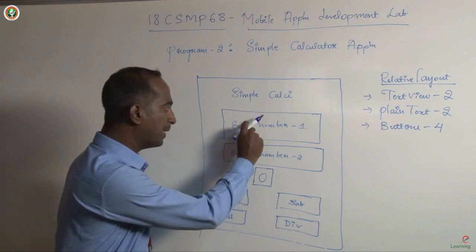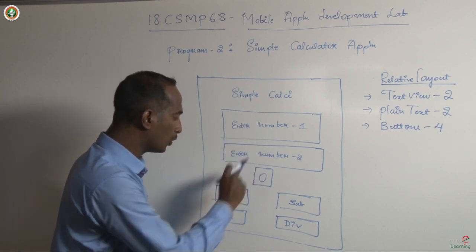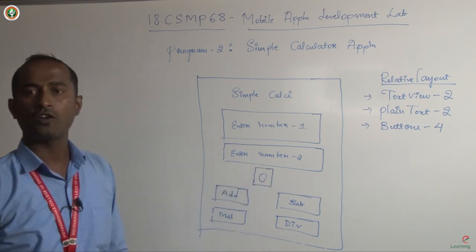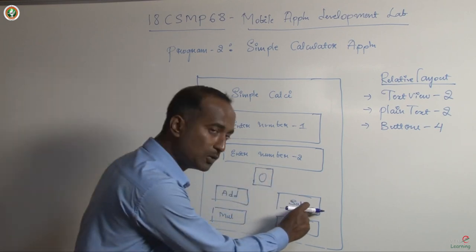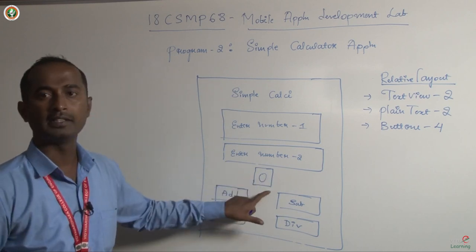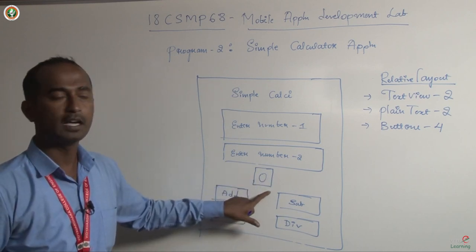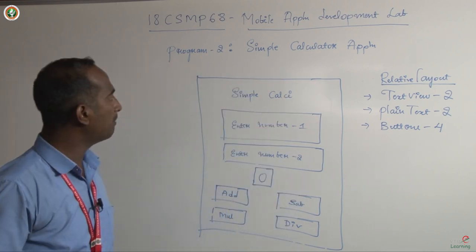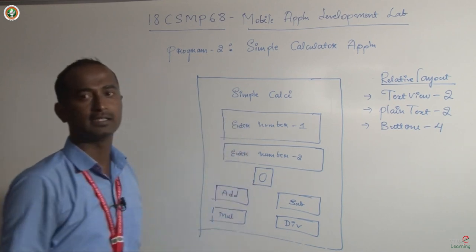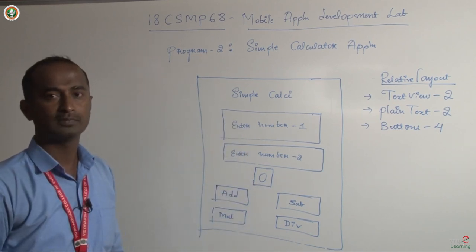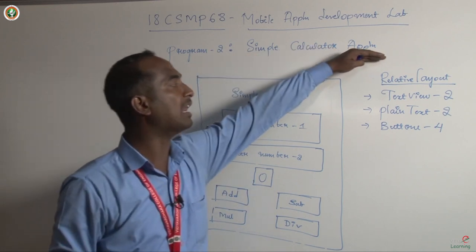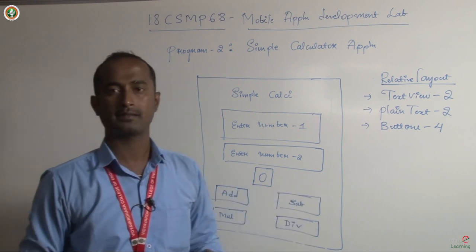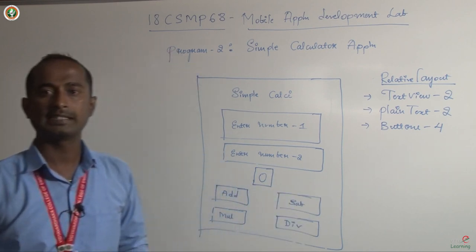The design requirement for the simple calculator application is: a title, two plain text fields for the two numbers, a result TextView, and four buttons. While developing the application, I will also show how to add the hint feature for the plain text fields. Let us start the development.